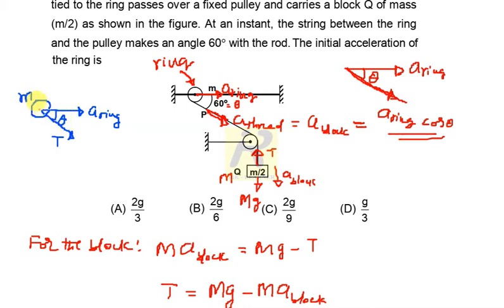So now what I use. The component of T along this direction is T cos theta. Therefore, T cos theta must be equals, it is m a ring. I call this equation 2.